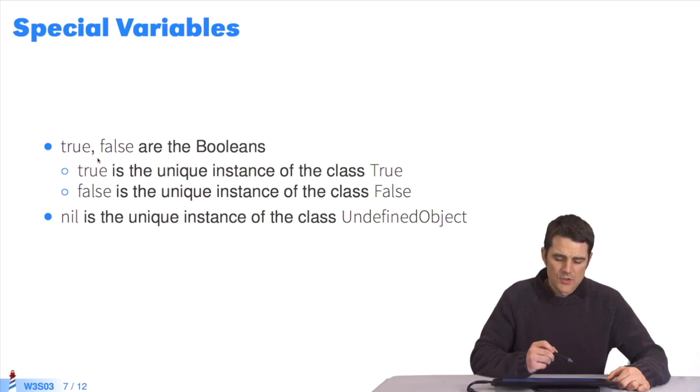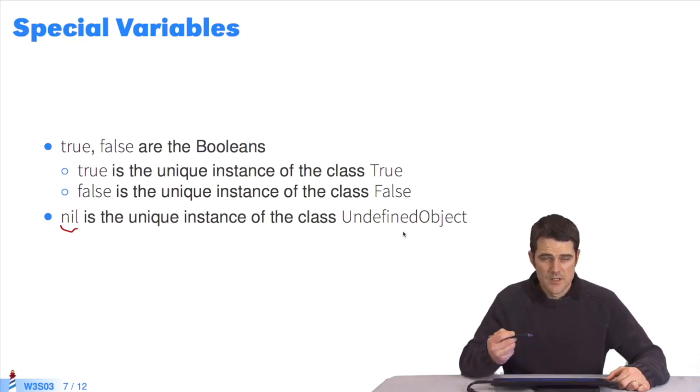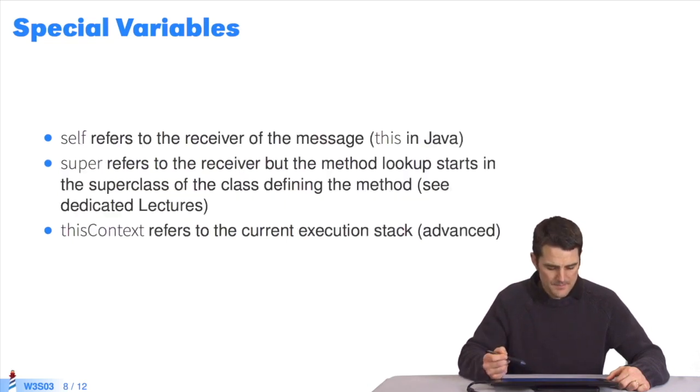True and false are instances of Booleans. True is the unique instance of the class true. False, the unique instance of the class false. Nil is the unique instance of the class undefined object. So true, false, and nil are objects like any other, except they are the unique instances of a specific class in the system.